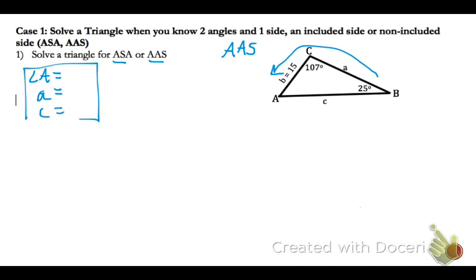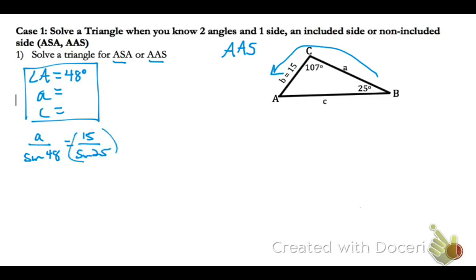Put a box around what you need to find, and when that graphic is filled in, you know you're done solving the problem. To find angle A, subtract the other two from 180 — that gives 48 degrees. Now let's start alphabetically and solve for side A. So A over the sine of angle A, which is the sine of 48 degrees, equals 15 over the sine of 25 degrees.